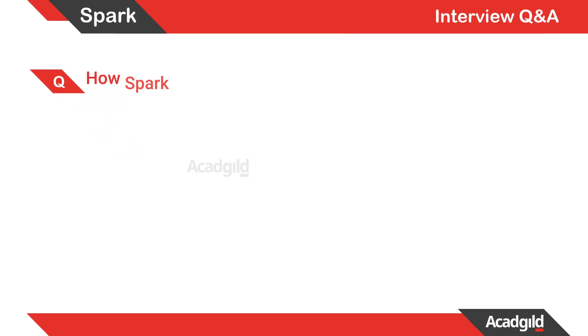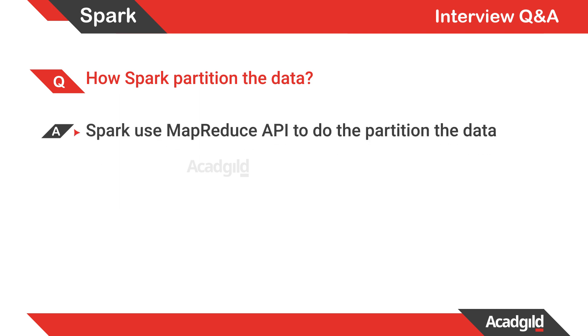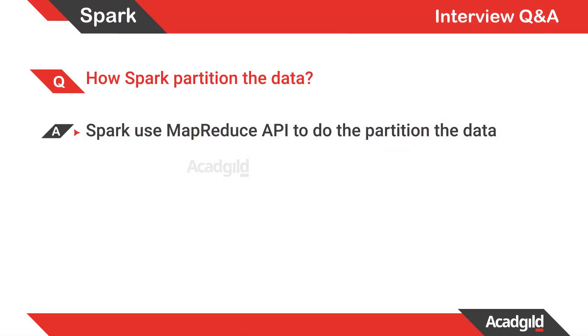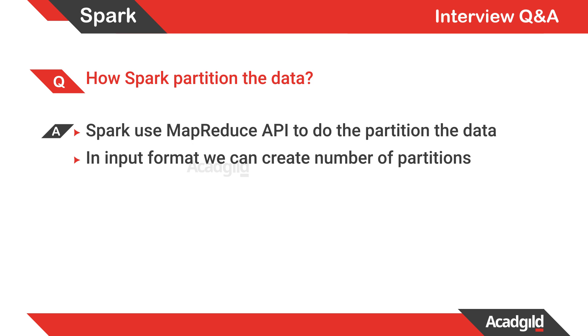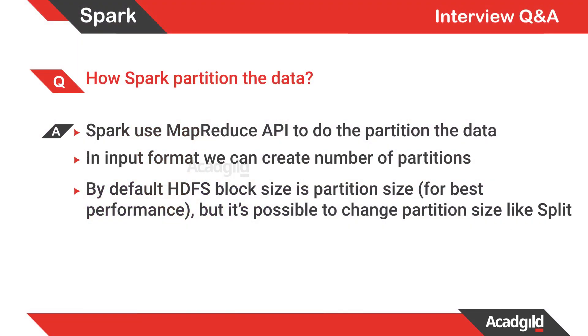Let's understand how Spark partitions data. Spark uses a MapReduce API to partition data — like MapReduce, it performs an input split, which is basically a logical division of data out of your blocks. In Spark's input format, we can create any number of partitions, just like we were creating n number of input splits in MapReduce.